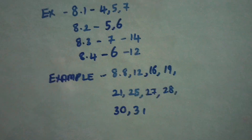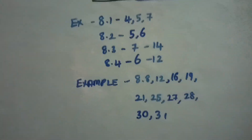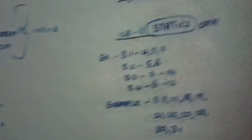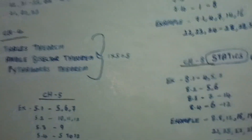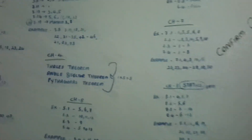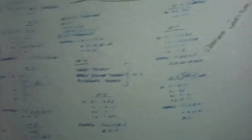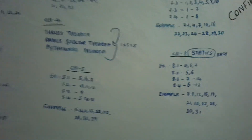Okay, so these are very important 5 marks. If you learn the 5 marks, you can score 50 out of 50. Let's see — okay, you can see all of them.